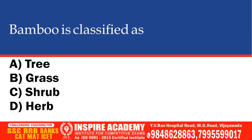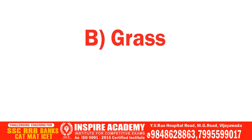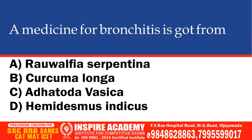Which of the following is a grass? Options: Asafoetida, Fennel, Turmeric, Shrub, Herb. The correct option is Grass.